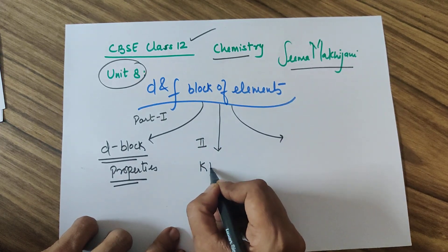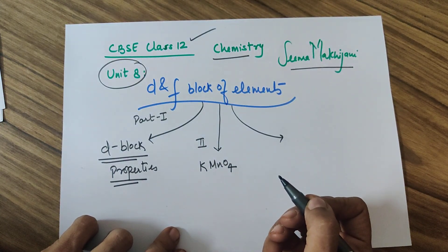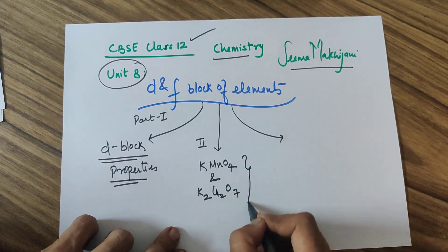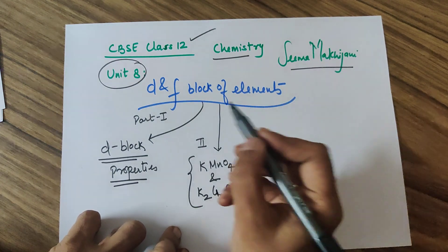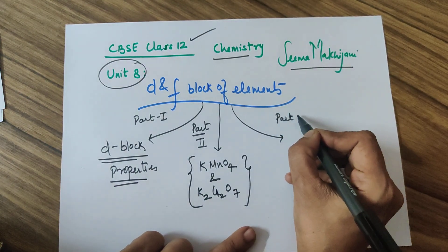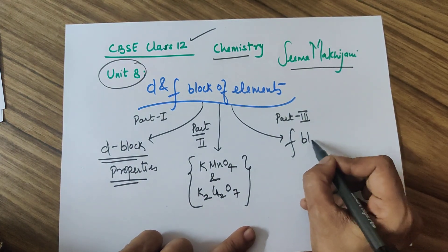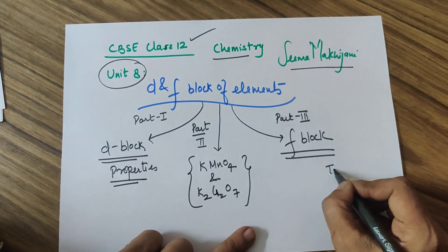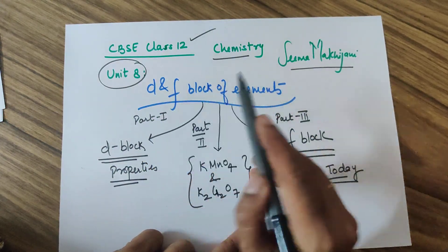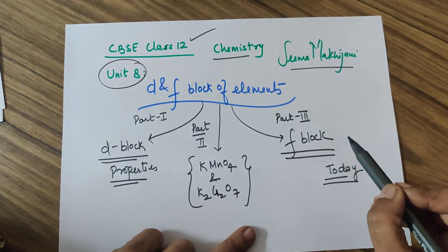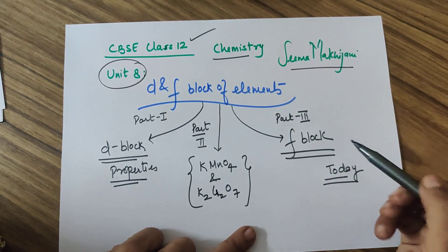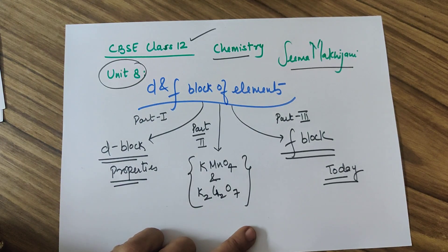Part 2 will be a detailed study of KMnO₄ (the oxidizing agent) and K₂Cr₂O₇. Part 3 covers the F block elements, which is what we are doing today. The agenda for today's class is the lanthanoids and actinoids, and a comparative study of the two. So let's begin.